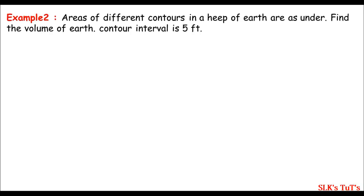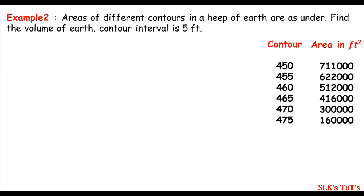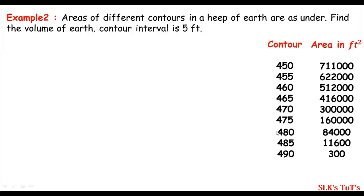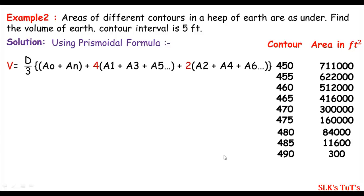Example 2: The areas of different contours in a heap of earth are given, and we are asked to find the volume of earth. The contour interval is 5 feet. I'll solve this using the prismoidal formula. I'll plug values in: V equals 5 divided by 3 times...